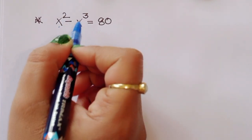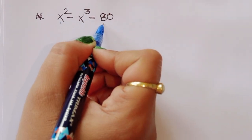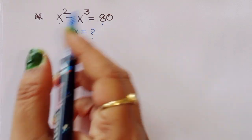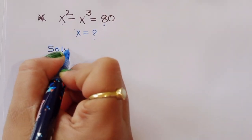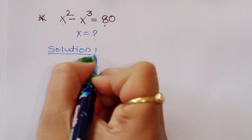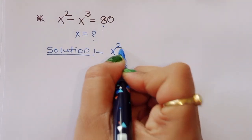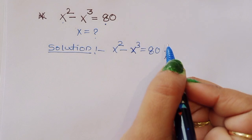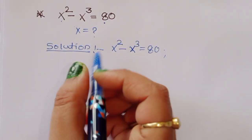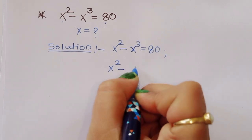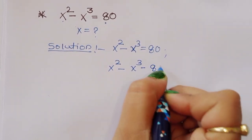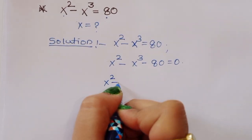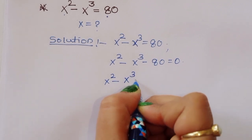The question is: given x squared minus x cubed is equal to 80, we have to find out the value of x. Now let's see the solution. We can write this as x squared minus x cubed minus 80 is equal to 0.